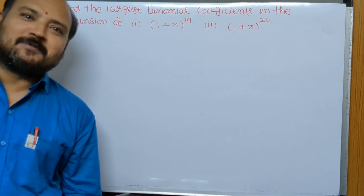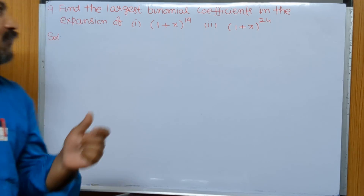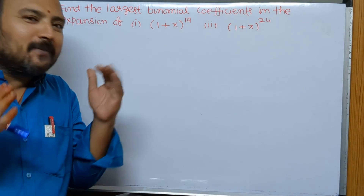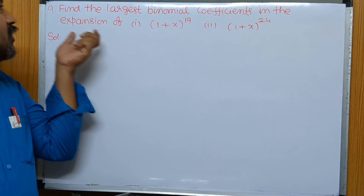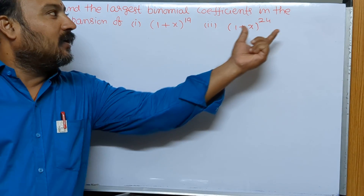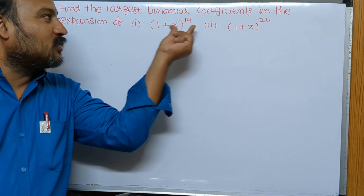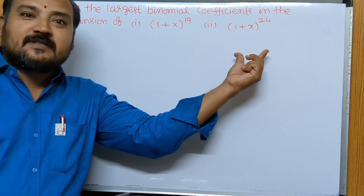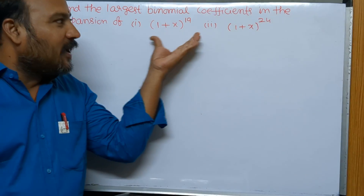Hi dear students, welcome to our channel Maths with Parindra. In this video, two most important questions in binomial theorem. We may expect this type of question: find the largest binomial coefficient in the expansion of (1+x)^19 and (1+x)^24. First, observe the expansions.